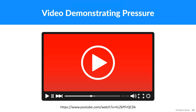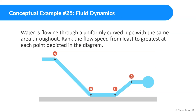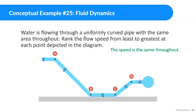Let's do some example problems. Water is flowing through a uniformly curved pipe with the same area throughout. Rank the flow speed from least to greatest at each point depicted in the diagram. The answer is the speed is going to be the same throughout. Because the area is the same all throughout this tube, the speed needs to be the same throughout — otherwise there'd be a vacuum inside, which wouldn't make sense.